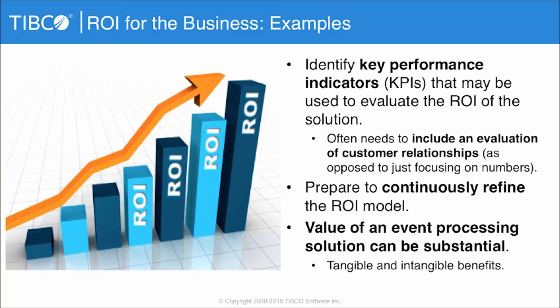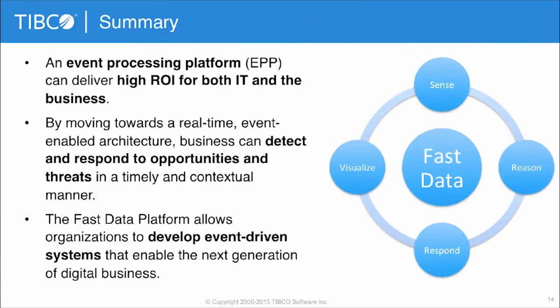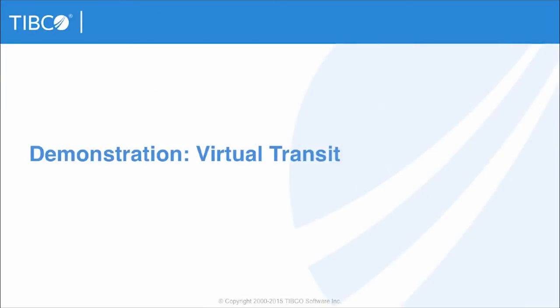These models need to be continuously refined — including both tangible and intangible benefits. In summary, an event processing platform can deliver high levels of ROI for both IT and the business. By using an event processing platform, I can respond to events in real time and detect certain situations sooner. We're going to see how it can help customers get better, more timely information through a transportation logistics example. An overall fast data platform allows you to generate event-driven applications that will enable the next generation of digital business.